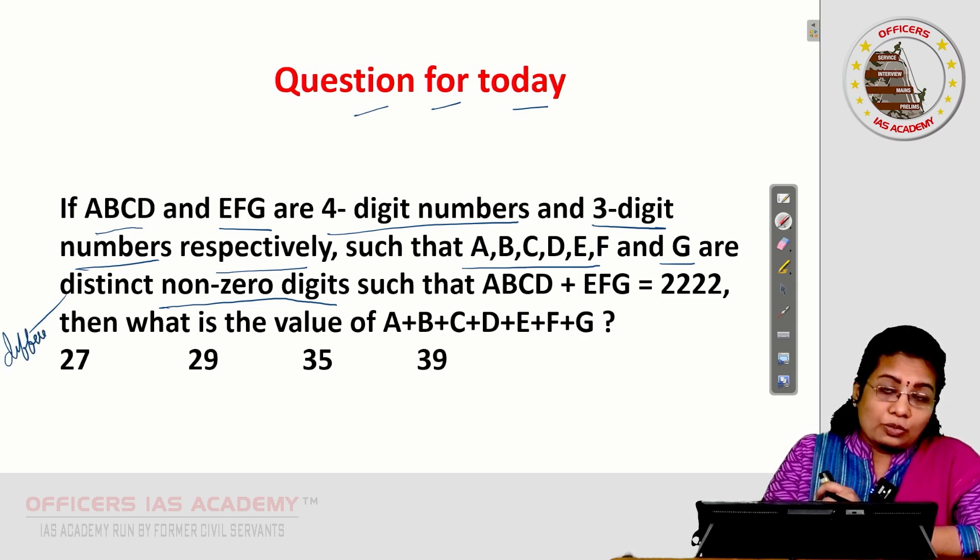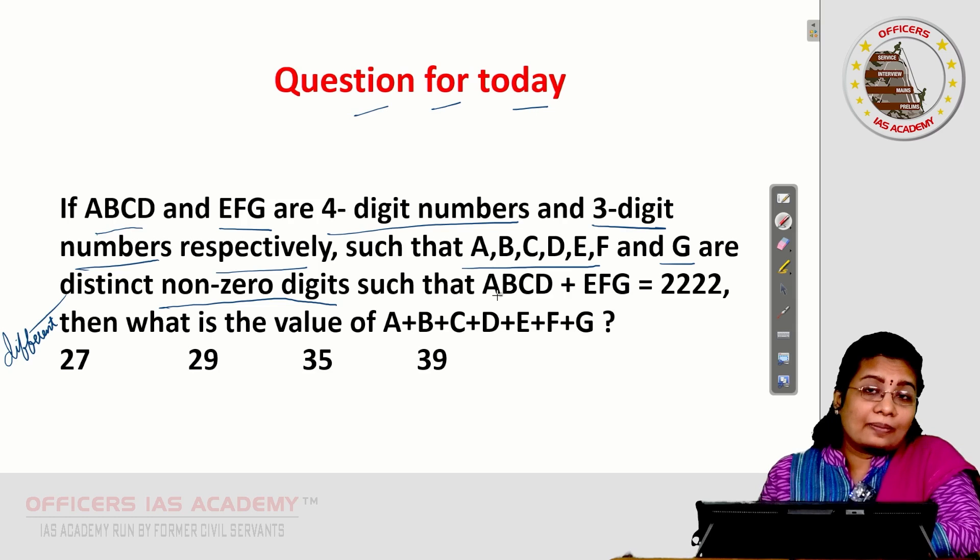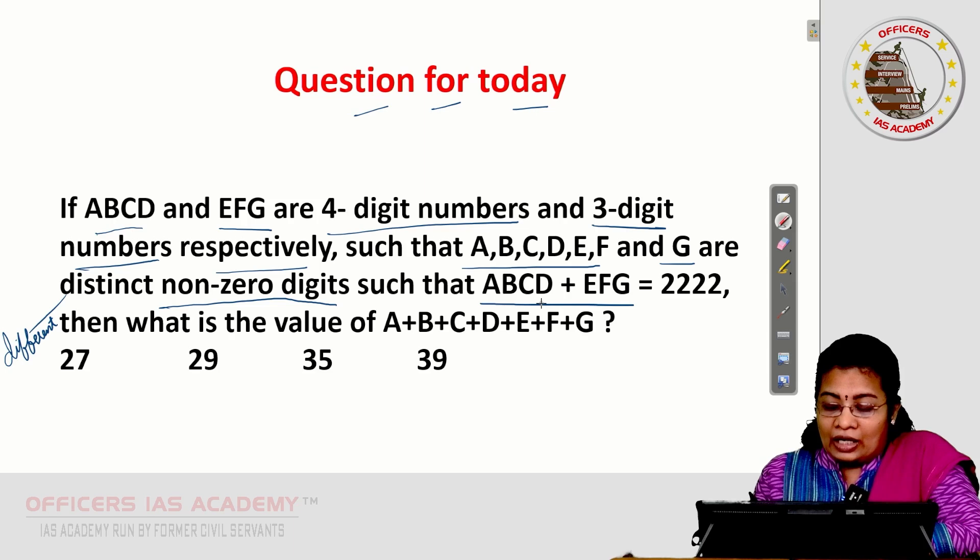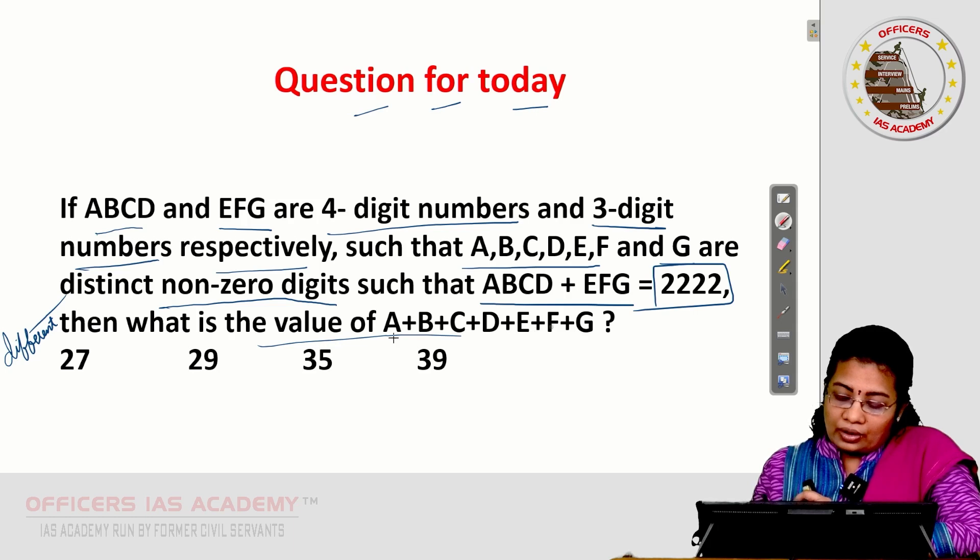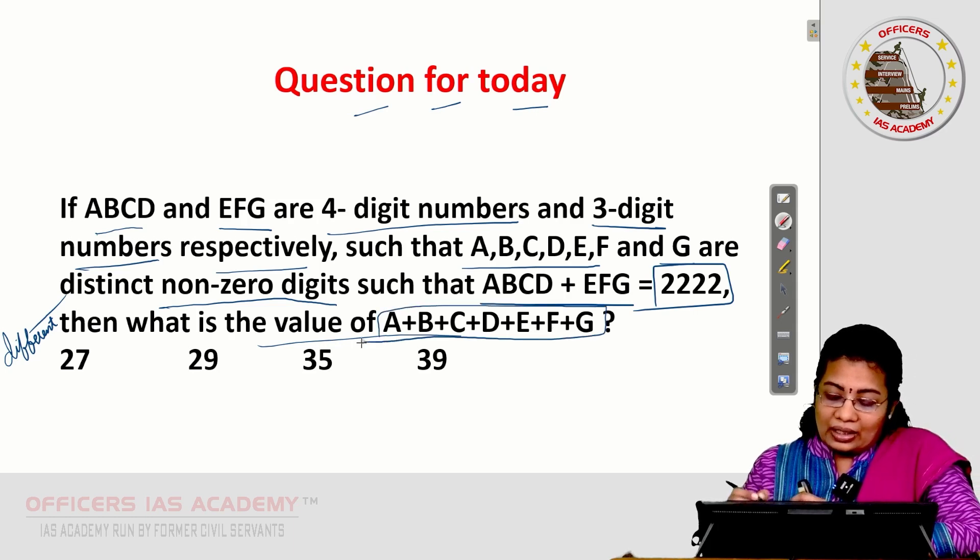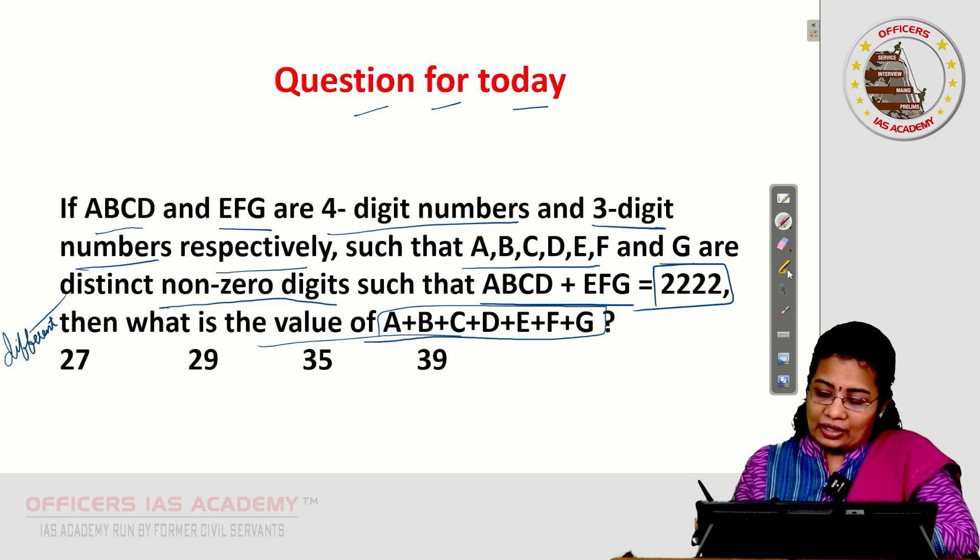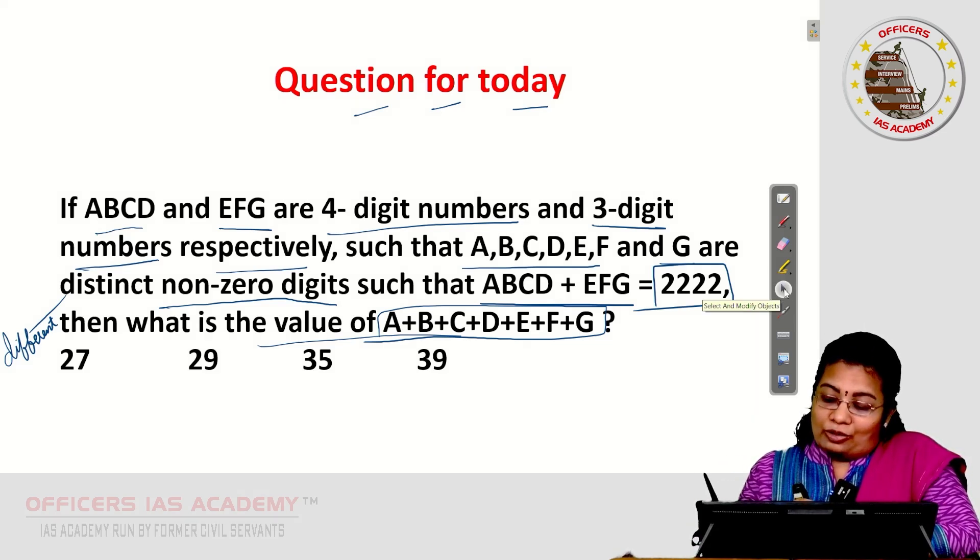Different non-zero digits means you can allot any single-digit number except 0 such that A, B, C, D plus E, F, G equal to 2222. What is the value of A, B, C, D, E, F, G together? The sum you want to find. As usual you can post your answer in the comment section.